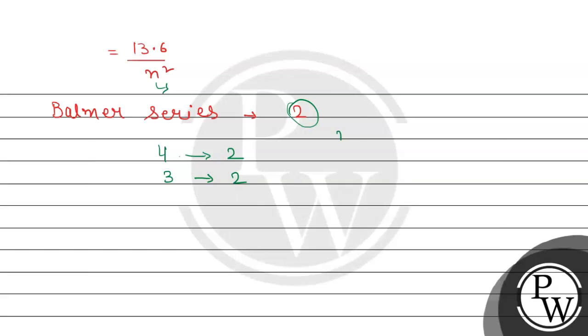Two lines are observed, which means the emissions will be from 4 to 2 and from 3 to 2. How are we saying this? For Balmer, the n1 value, which is the fixed orbit, is always the second orbit. And n2 varies, starting from 3, 4, 5, and going on.